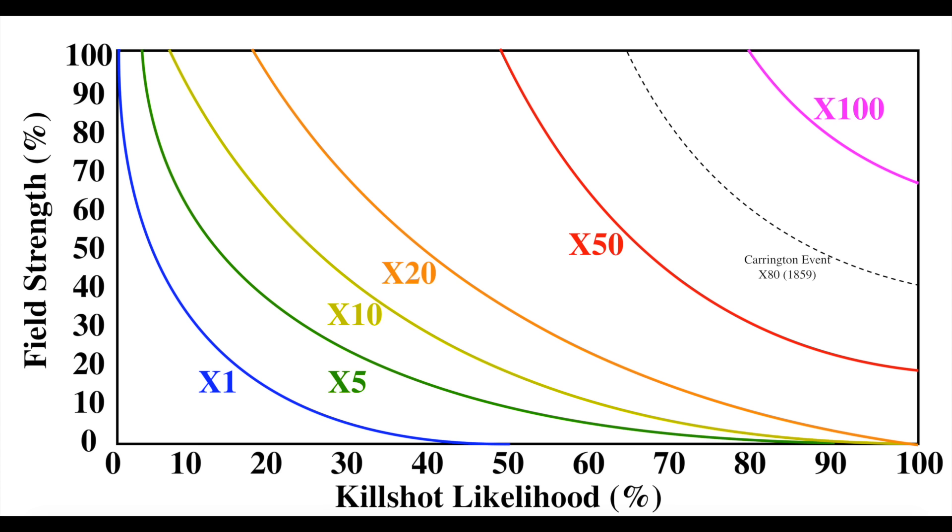The curves all bend to the right as they come down, that's as the magnetic field weakens. The chances that a given solar storm will cause considerable damage goes up as the magnetic pole shift draws near. That's what this curve of increasing vulnerability due to the magnetic pole shift looks like.